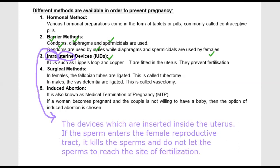Another method is the surgical method. In females, the fallopian tubes are cut and ligated — a procedure called tubectomy. The fallopian tube is the site of fertilization; by cutting and ligating it from the ovaries side, the ovum cannot reach the site of fertilization. Tubectomy involves cutting and ligating the fallopian tubes. This method is irreversible — once the surgery is done, the fallopian tubes are very difficult to restore.